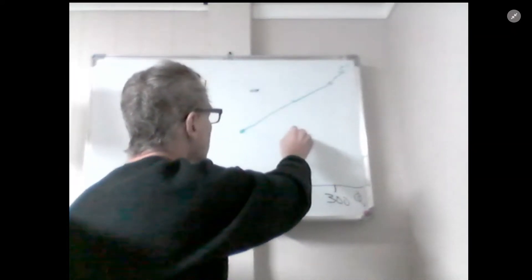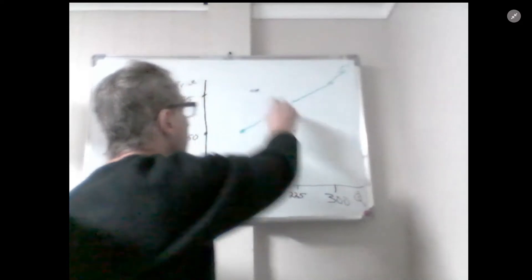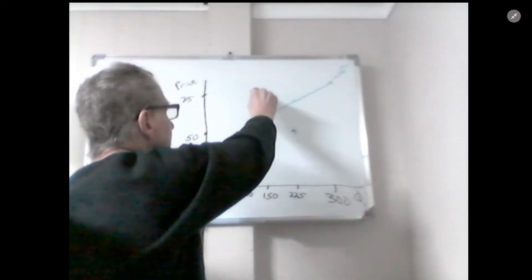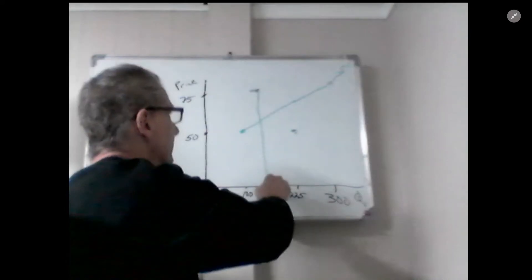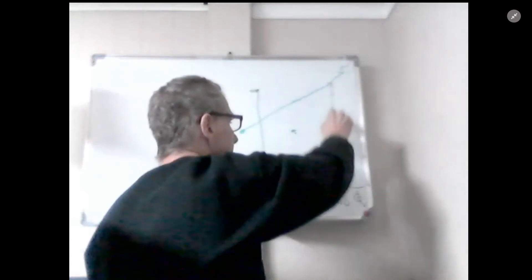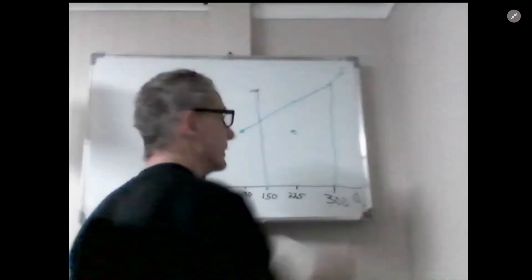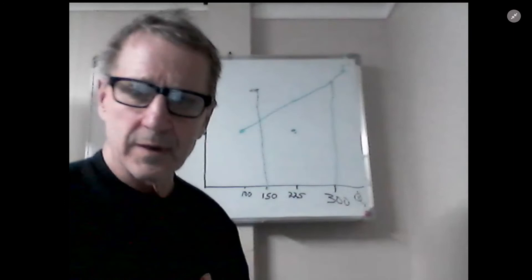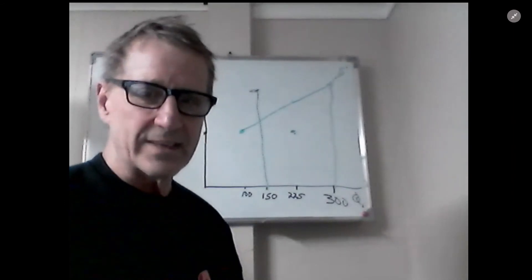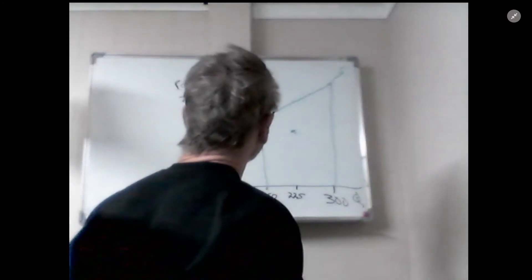At this particular price point, quantity demanded is 150,000 and quantity supplied is 300,000. There's a surplus - there are a lot of empty seats at a price of $75.